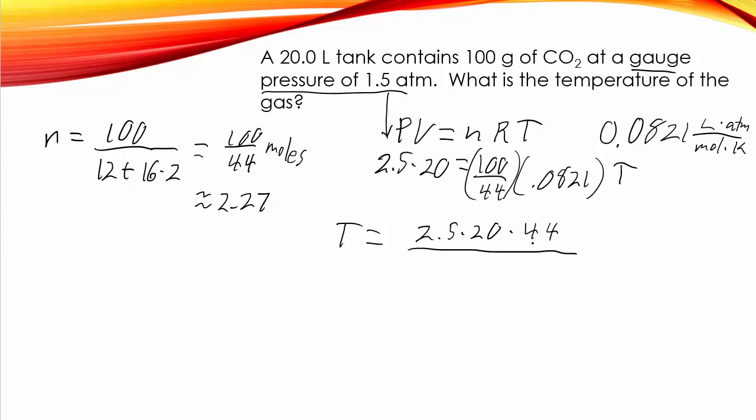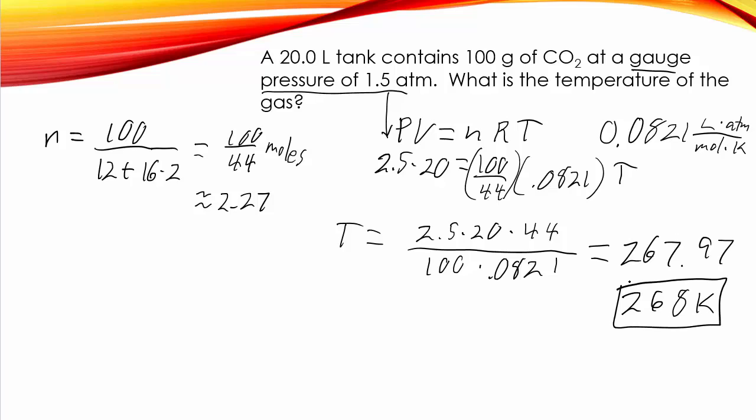And then we just solve that for T. So T is going to be 2.5 times 20 times 44 divided by 100 and also divided by our universal gas constant. And this works out to be about 268 kelvin. All right, that's all there is to it.